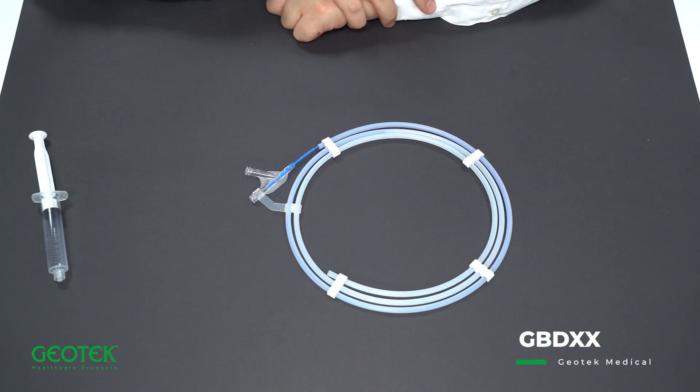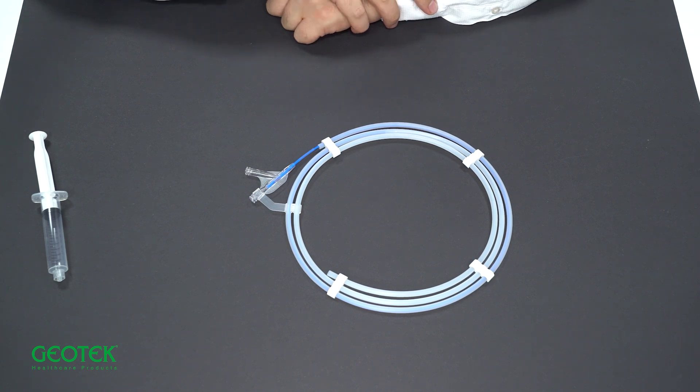Ureteral balloon catheters are extremely useful instruments both for widening and passing ureteral strictures and for allowing retrograde opaque films to be taken in the same session.